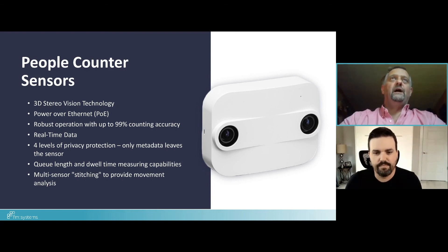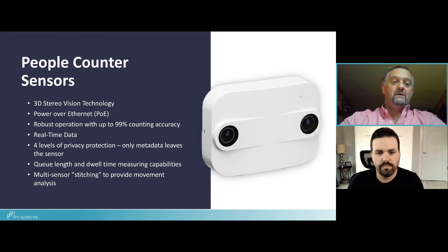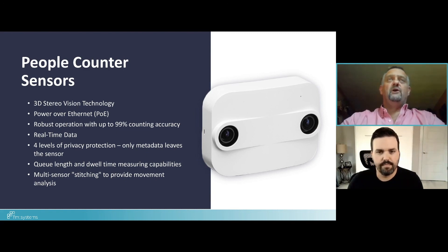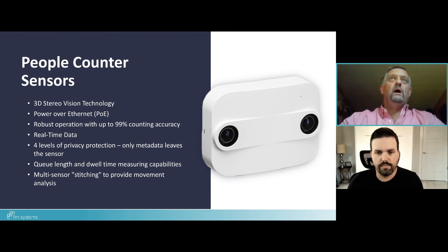For a small phone booth designed for single occupancy, an area sensor isn't needed — a PIR sensor works fine. For collaboration and soft seating spaces, PIRs don't work; area sensors are ideal. And then there are spaces where you simply want to know how many people are in the space, not necessarily what they're doing — that's where people counter sensors come in.